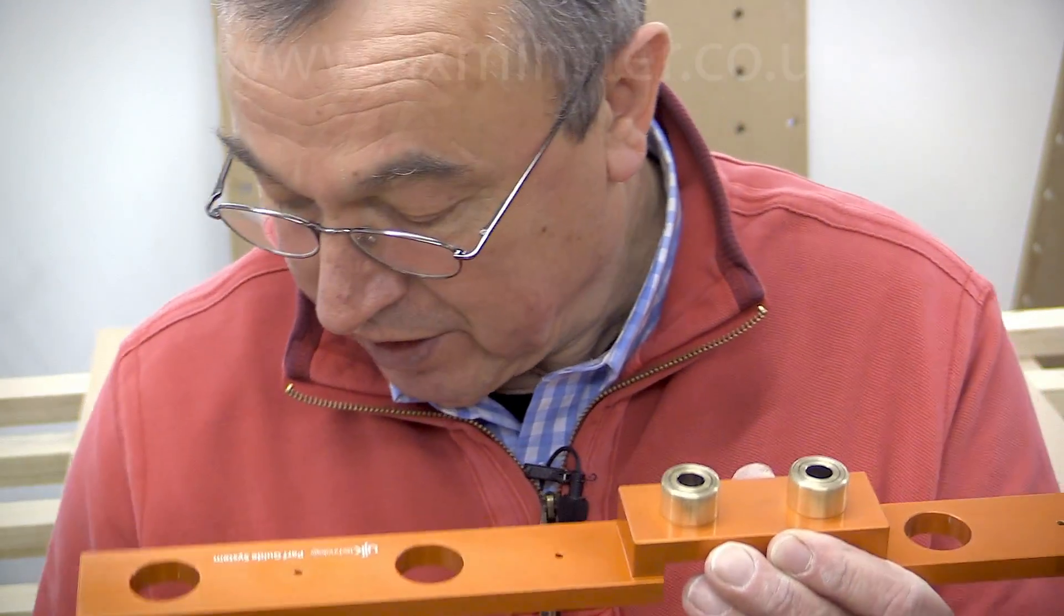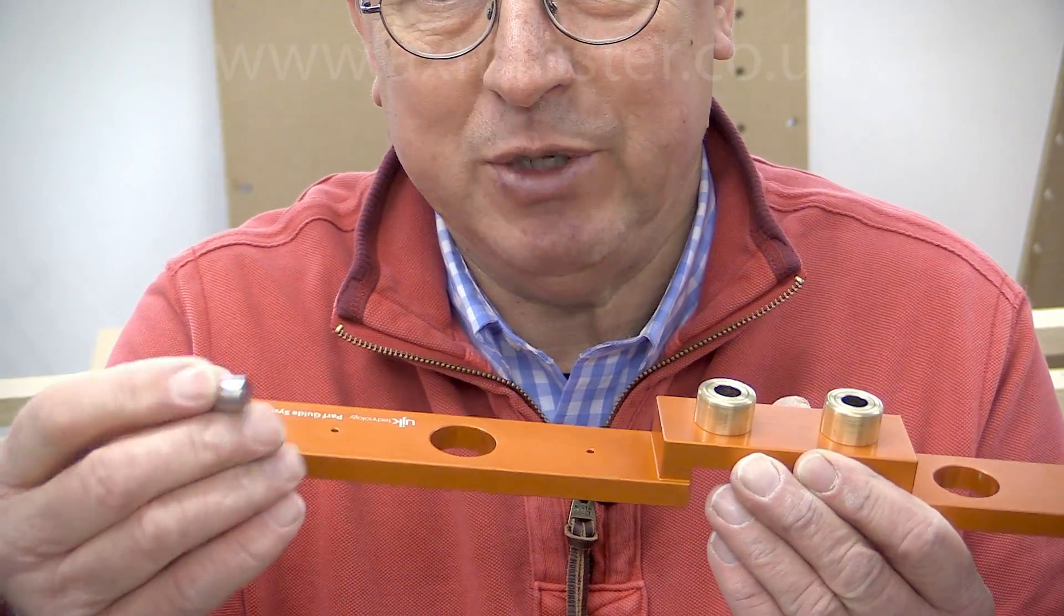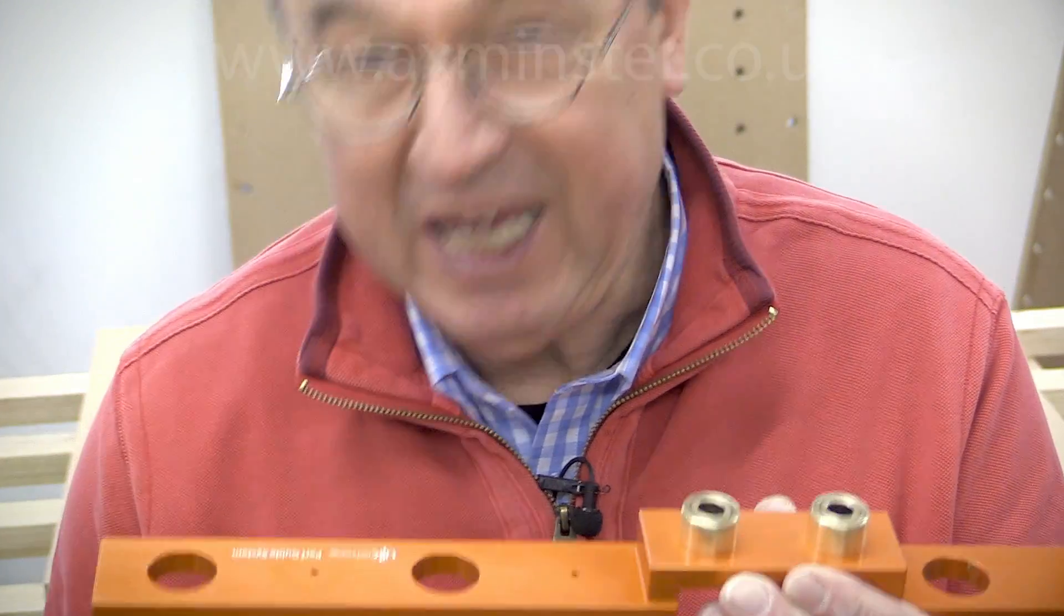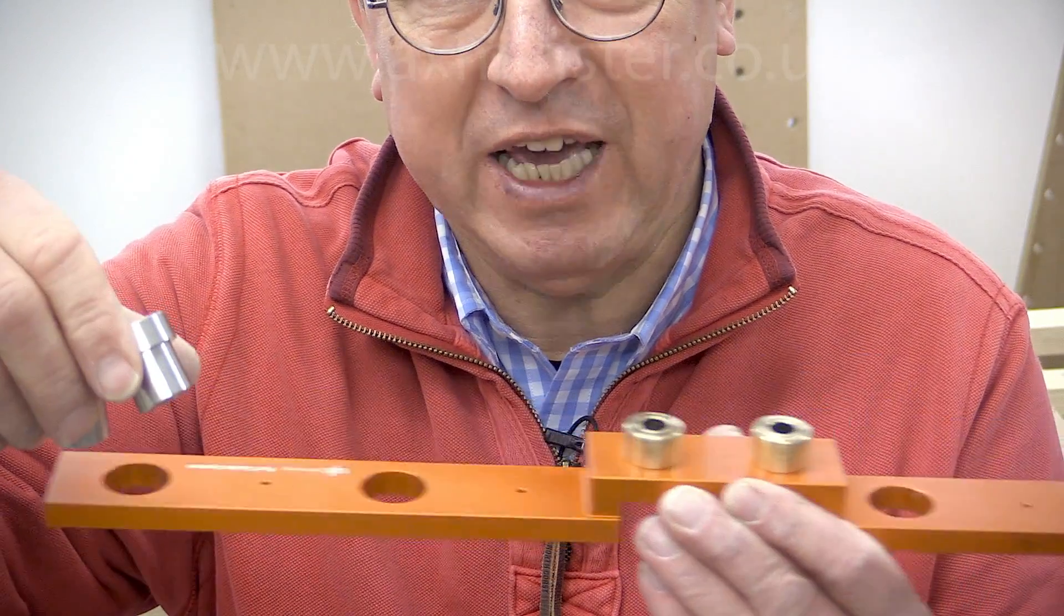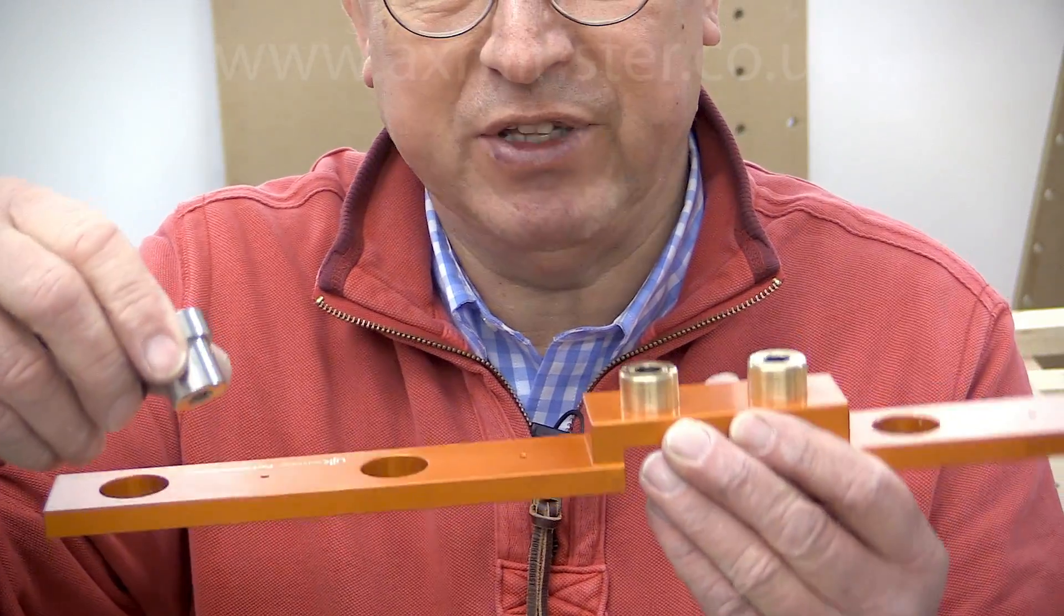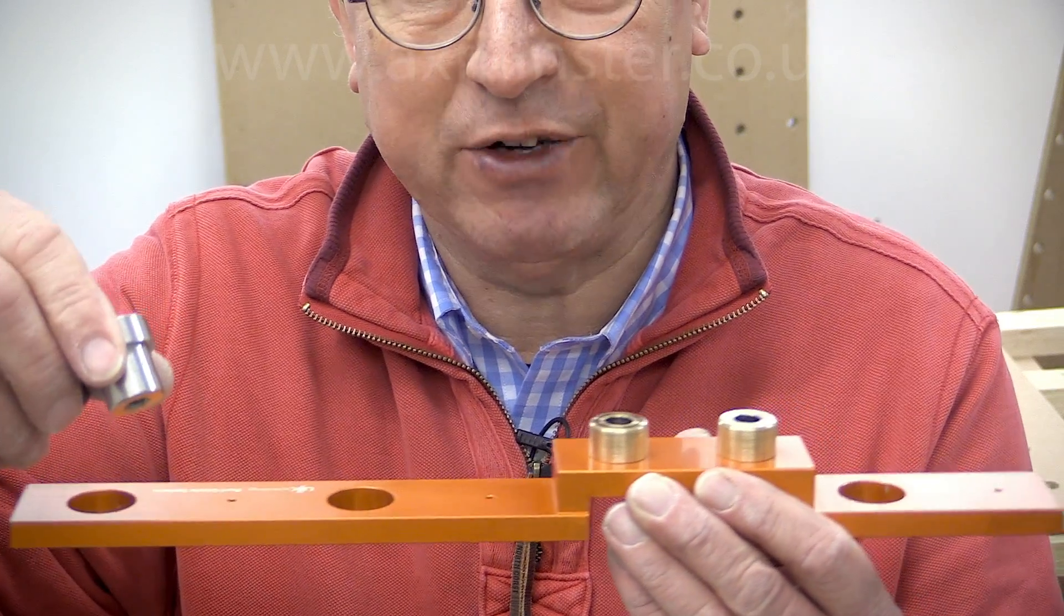Then on top of that again when we're using this block we're either using the three millimeter pins or the equally as accurate Veritas small bench dogs to locate this drill block and so everything is being located very accurately indeed.